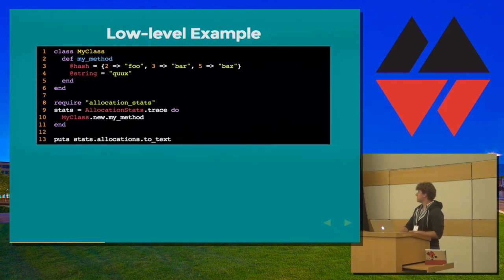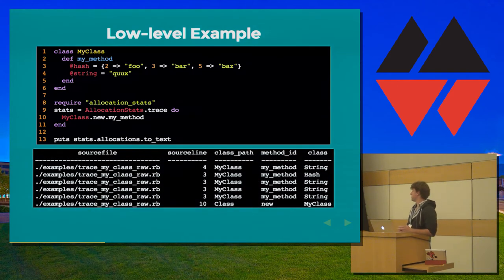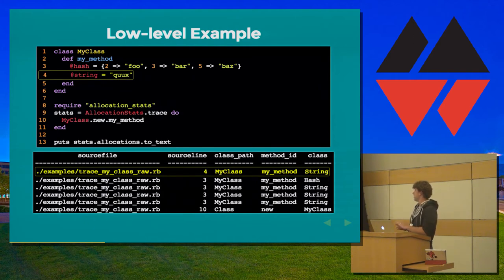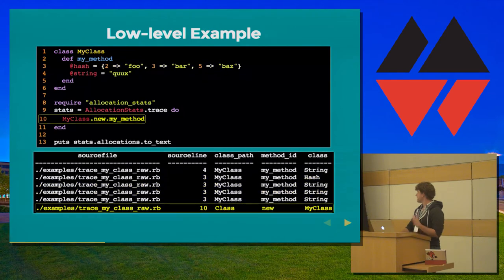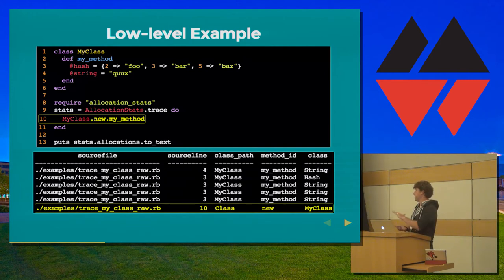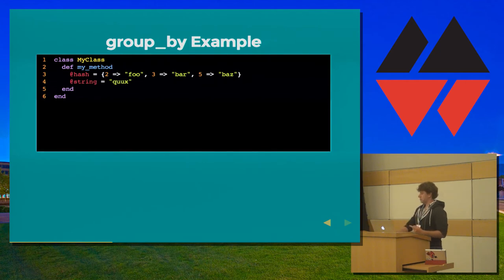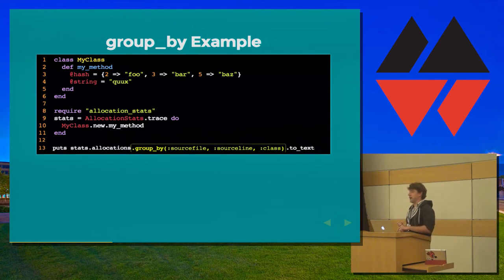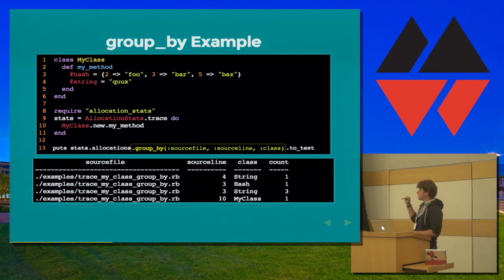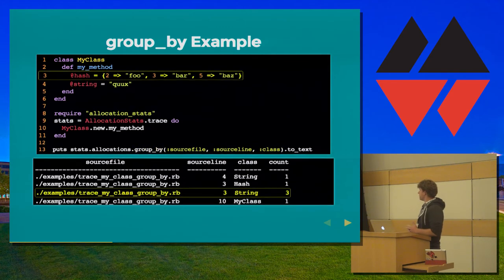So we can see: on line 4, we allocated a string, and the class path and method were MyClass and my_method. On line 3, we allocated that hash and the three string values. On line 10, we allocated a new instance of MyClass — remember, each time you call .new, first it allocates memory and then it calls the initialize method. We haven't aggregated results yet, so let's use group_by. We'll group by source file, source line, and class. Now this tabular output shows allocations grouped by those three fields. We can see the three strings allocated on line 3 now show as a count of three — much more useful than seeing each individual allocation.